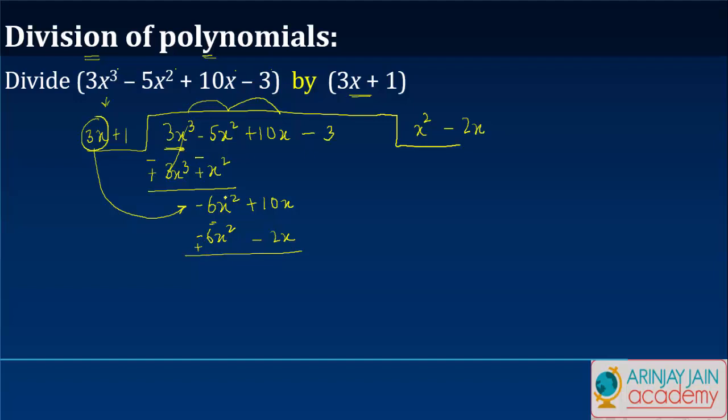This minus becomes plus, this gets knocked off, this minus becomes plus, 10 plus 2 gives me 12x minus 3.